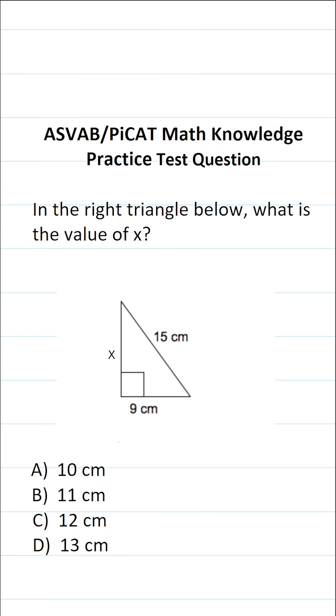The Pythagorean theorem says a squared plus b squared is equal to c squared, where a and b are the legs of the right triangle and c is the hypotenuse.